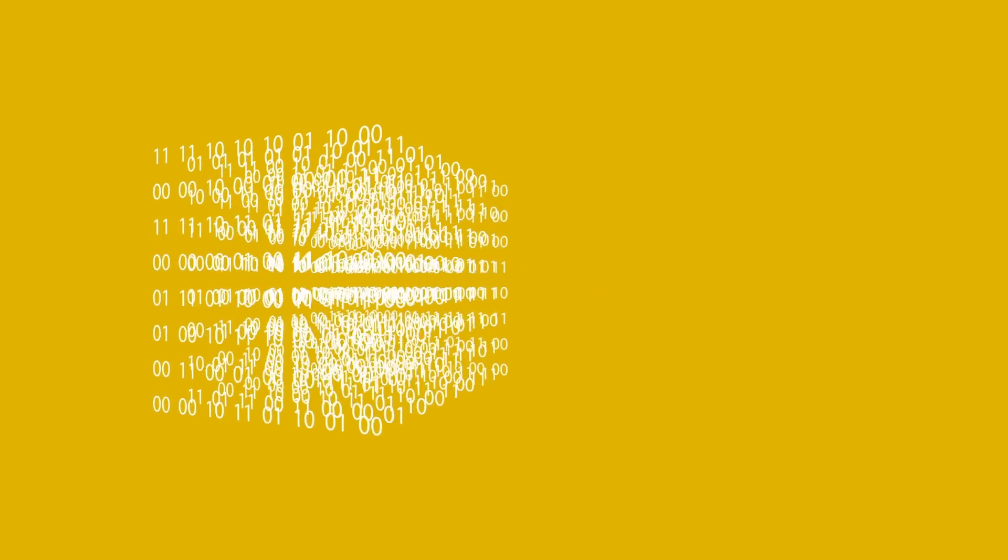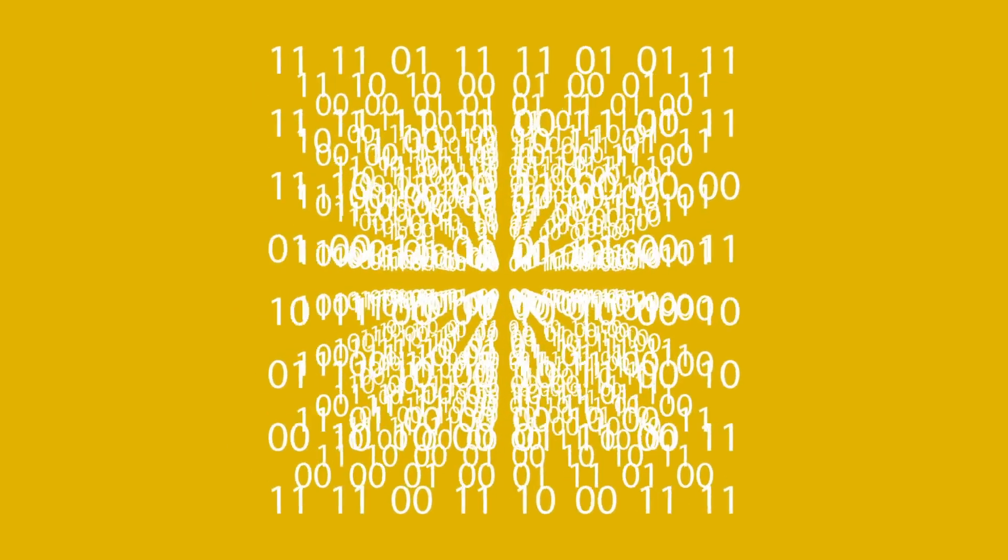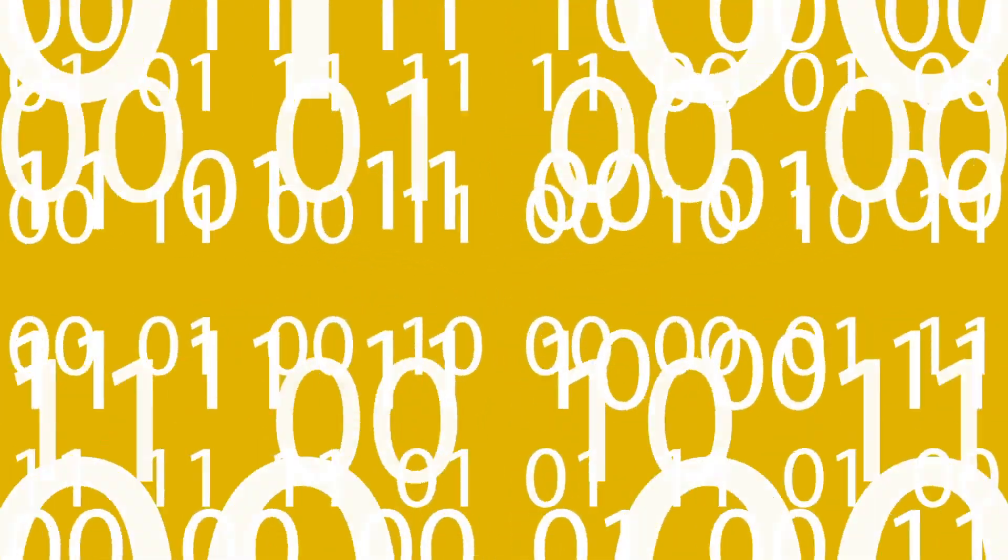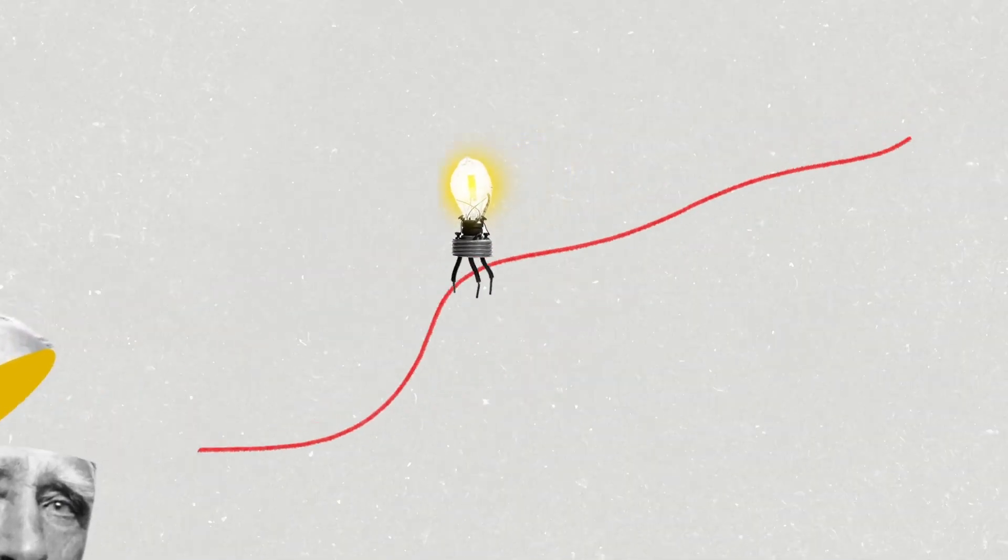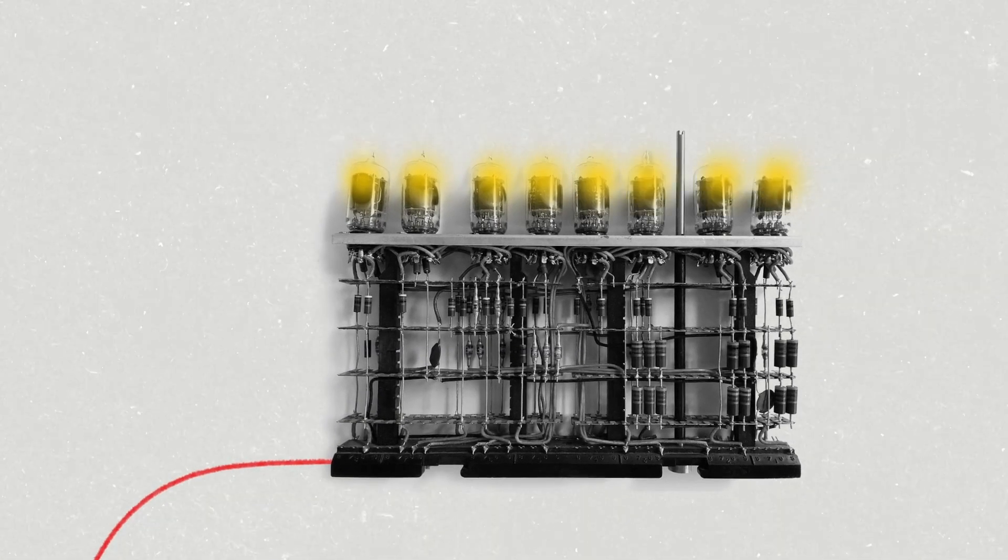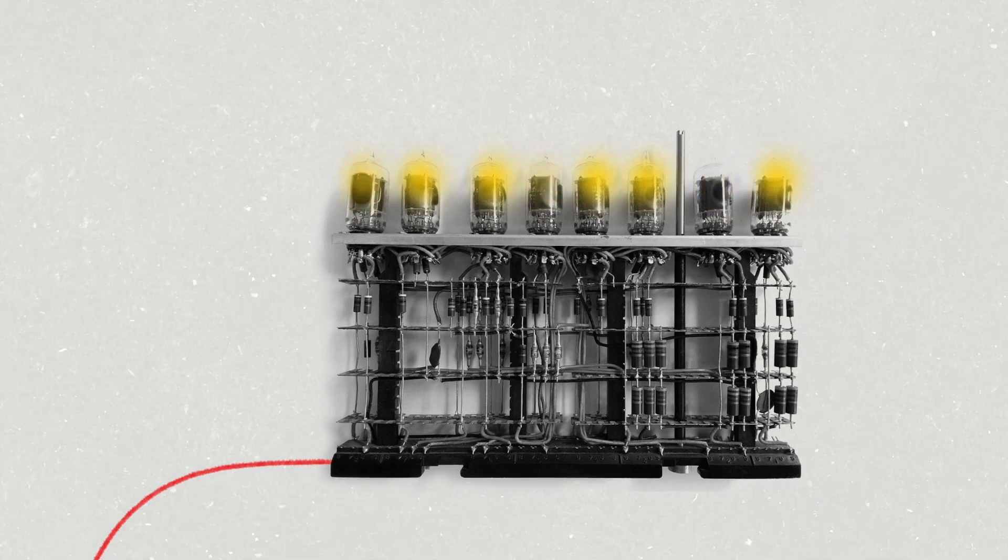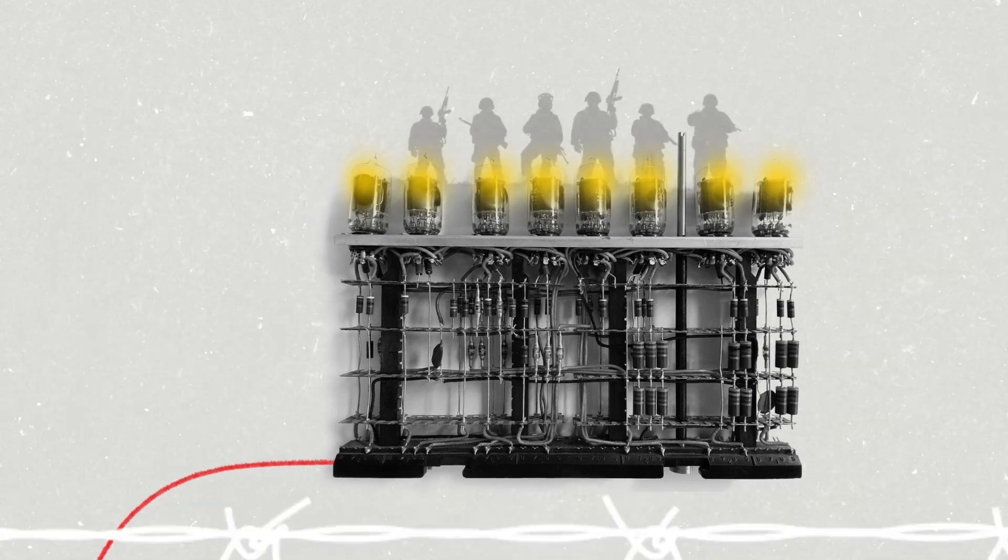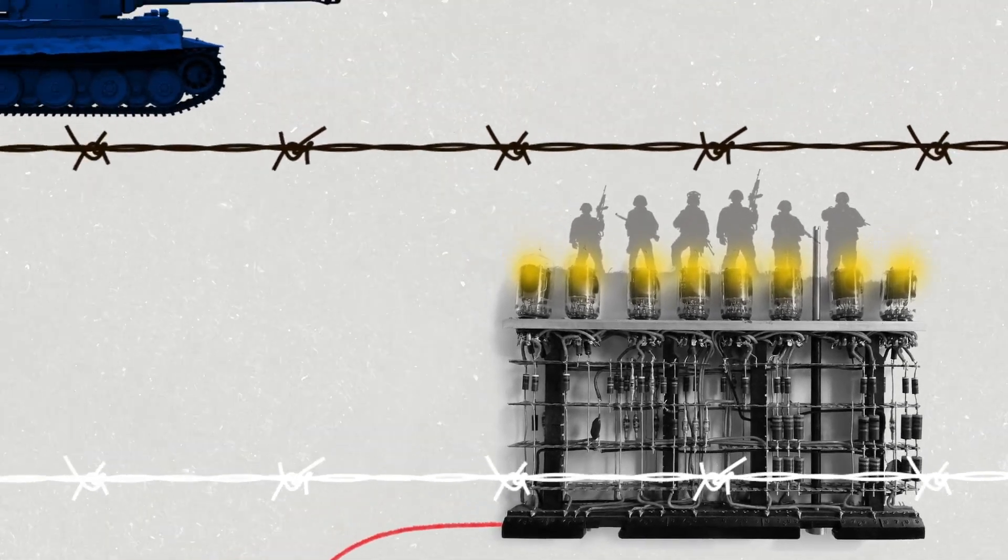The invention of vacuum tubes in 1904 made possible the first electronic calculations. But it was the imperatives of World War II that really accelerated this technology, used to decipher enemy codes and plot missile ranges.